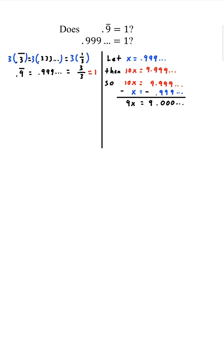We subtract the two equations, and we notice 10x minus x is 9x, and 9.999... minus 0.999..., all the decimals will cancel, leaving just 9. So we have 9x equals 9, divided by 9...